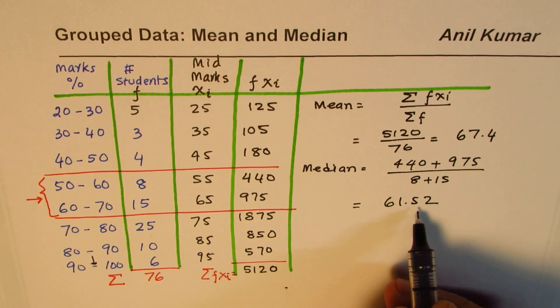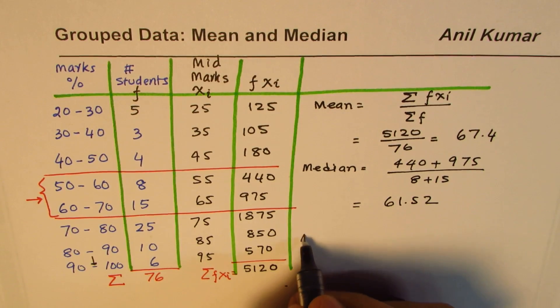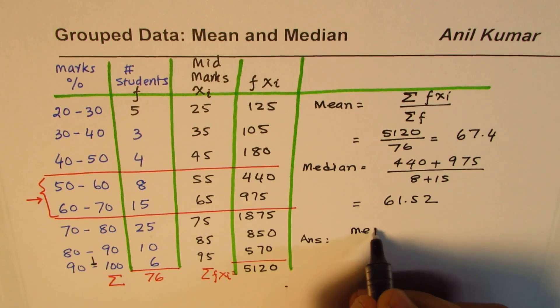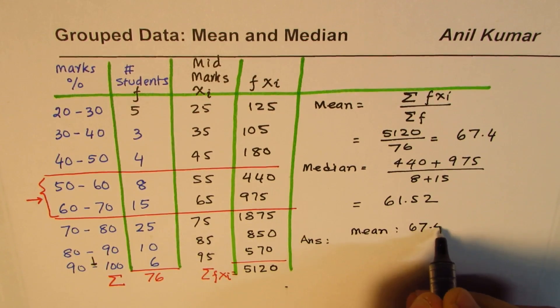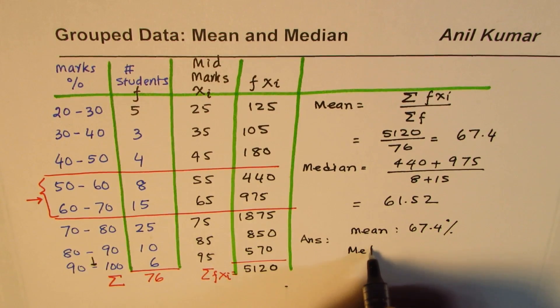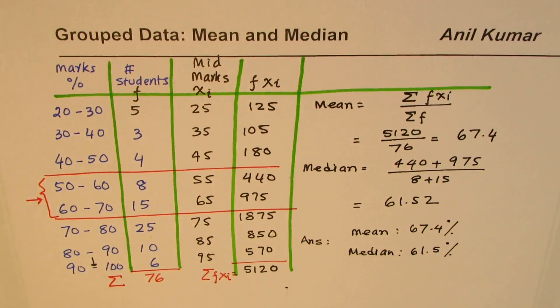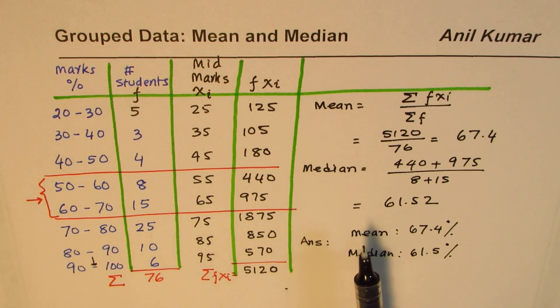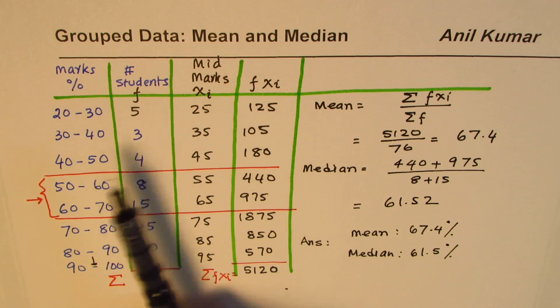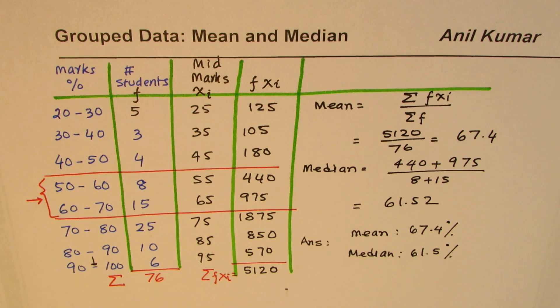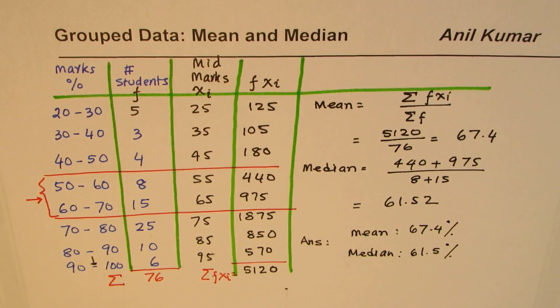In our case we get a median of 61.5 percent. So we have mean of 67.4 percent and median is 61.5 percent. In grouped data, the important thing is you have to take the midpoint and then multiply it by frequency to get the total marks and find the answer. I'm Anil Kumar and I hope these calculations help you to understand the method of analyzing grouped data. You can always share and subscribe to my videos. Thank you and all the best.